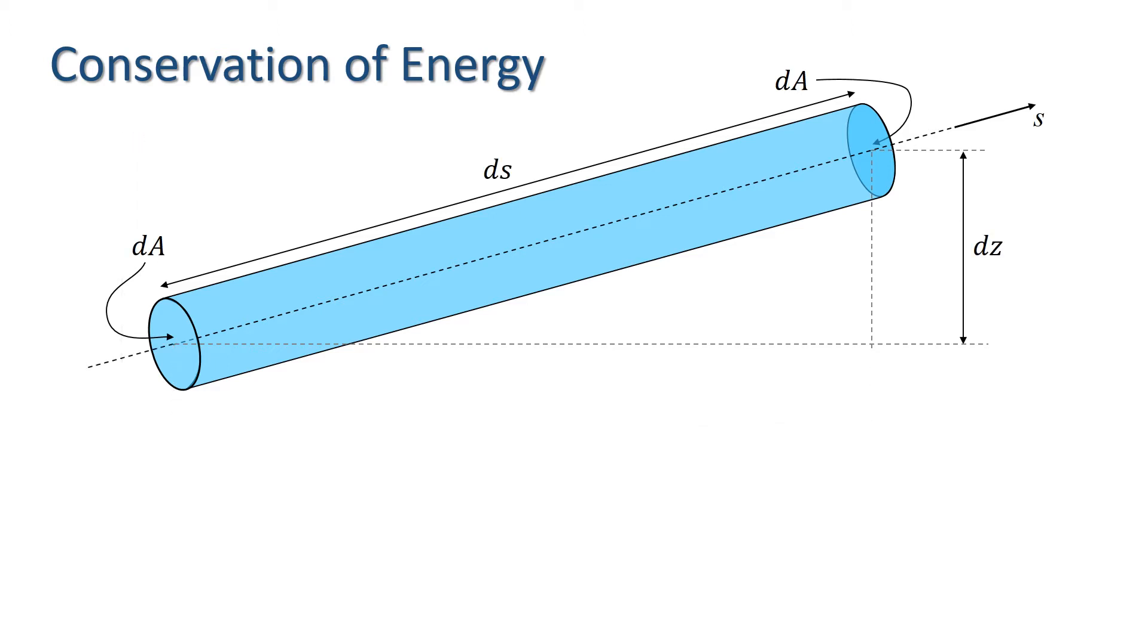The forces acting on the stream tube are pressure forces and the gravity force. If we have a pressure P on the left-hand cross-section, then the pressure at the right-hand cross-section will be P plus dP/dS times dS by the chain rule. And then we have the weight of the fluid in the stream tube, W.